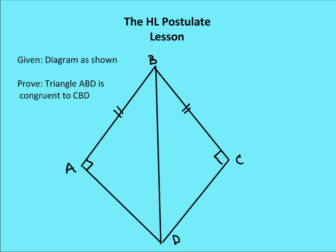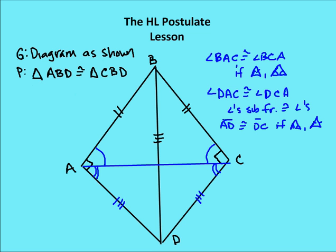We know that BD is congruent to itself. We're given two right triangles, and we know AB is congruent to CB. Let's move on to the proof.